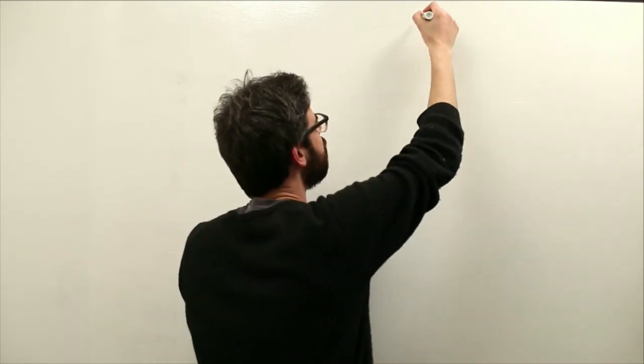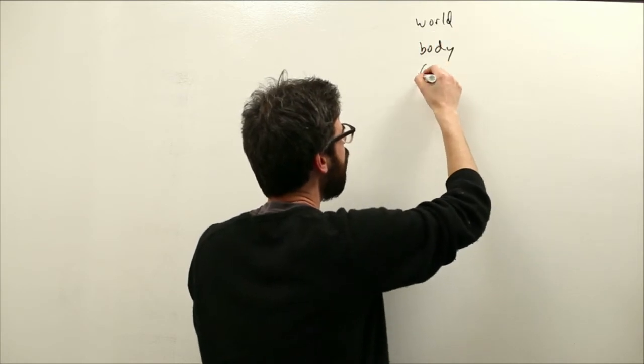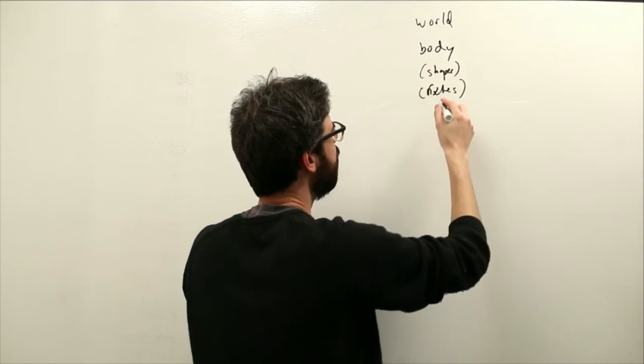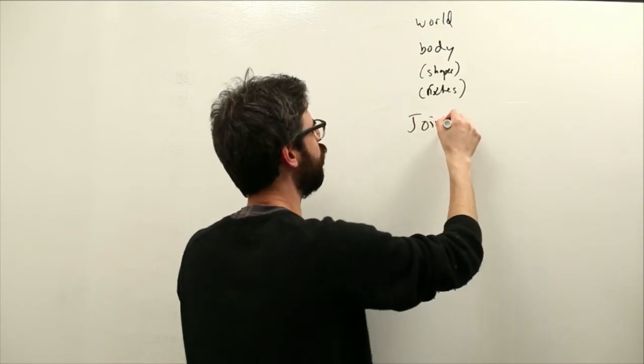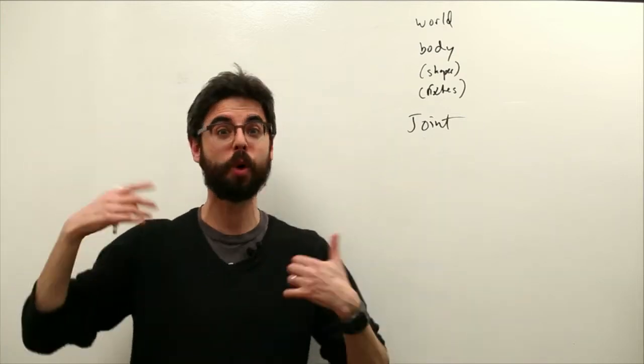In Box2D there's something called a world, then there's a body, and then bodies have shapes and fixtures, and then there's this thing called a joint. A body is the thing moving around the world, the world is the world that the bodies move around,